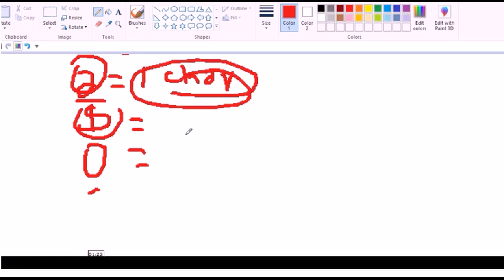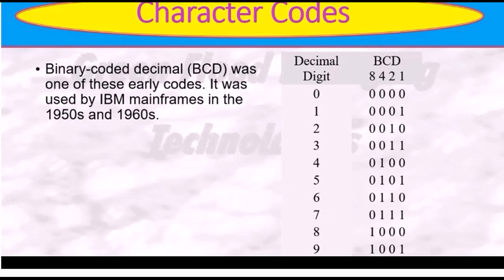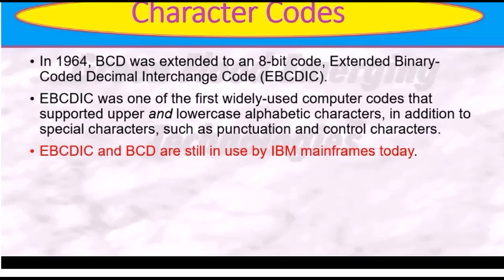For instance, Binary Coded Decimal was one of the early codes. It was especially used for bits to represent from 0 to 9, especially used by IBM in the 1950s to 1960s. Then this was extended to an 8-bit code, or what you call it, Extended Binary Coded Decimal. It was one of the first systems that supports upper and lowercase alphabetic characters in addition to special characters such as punctuations and control characters as well.